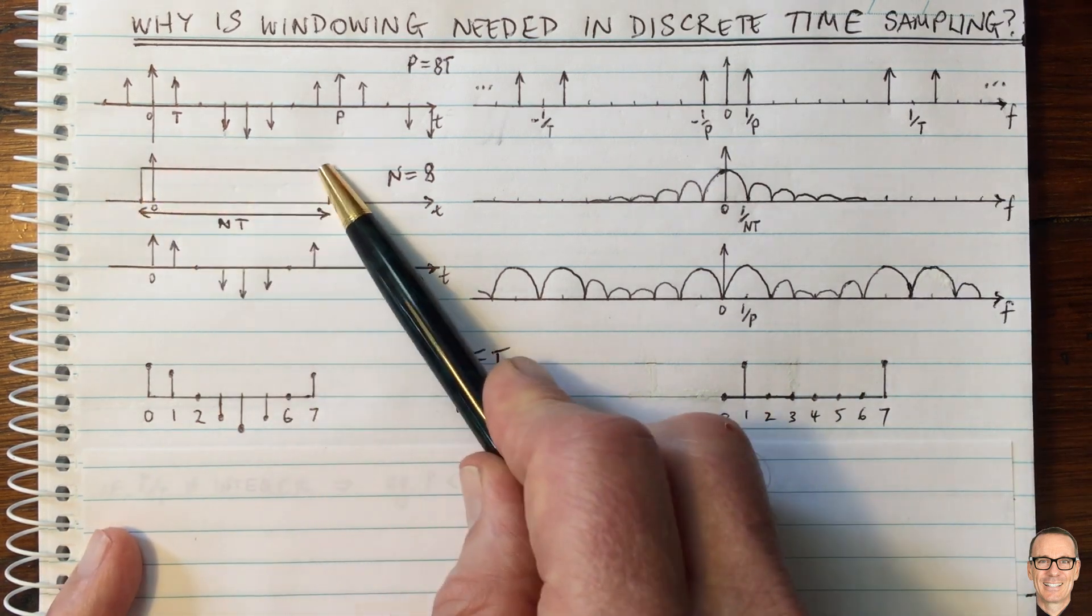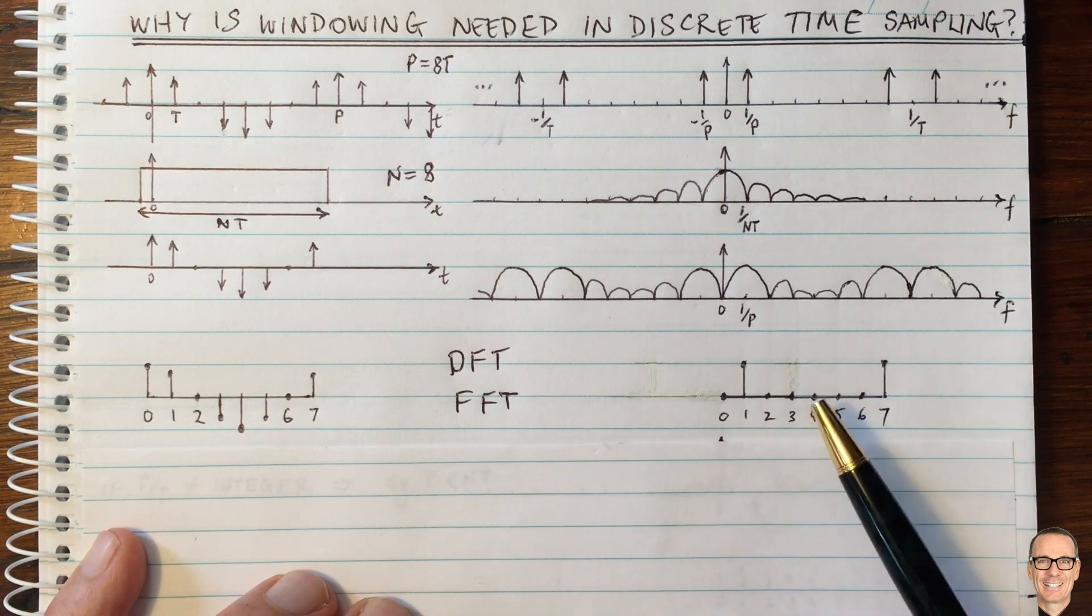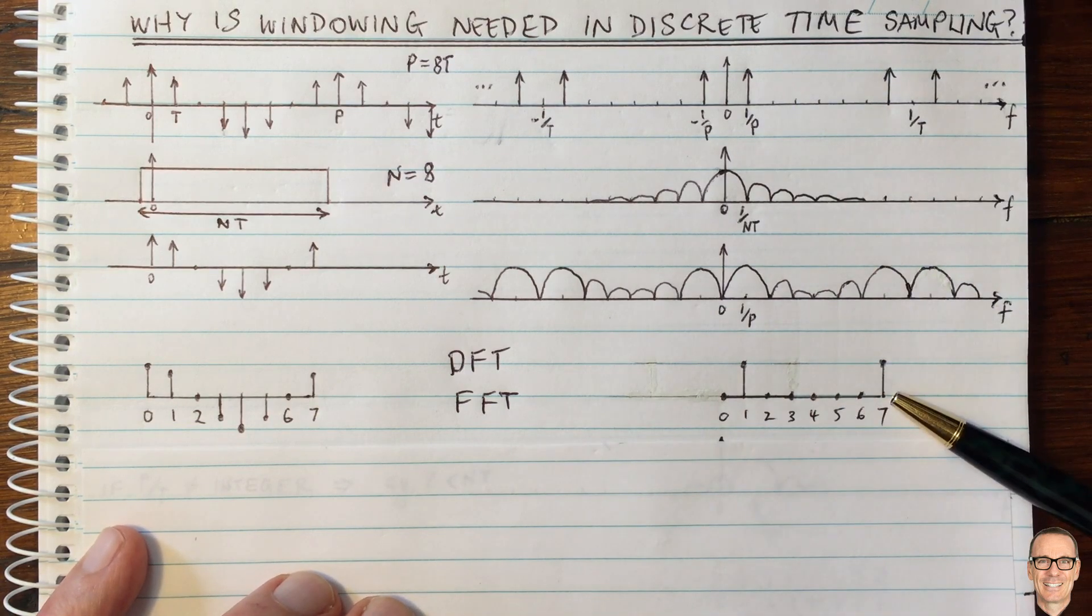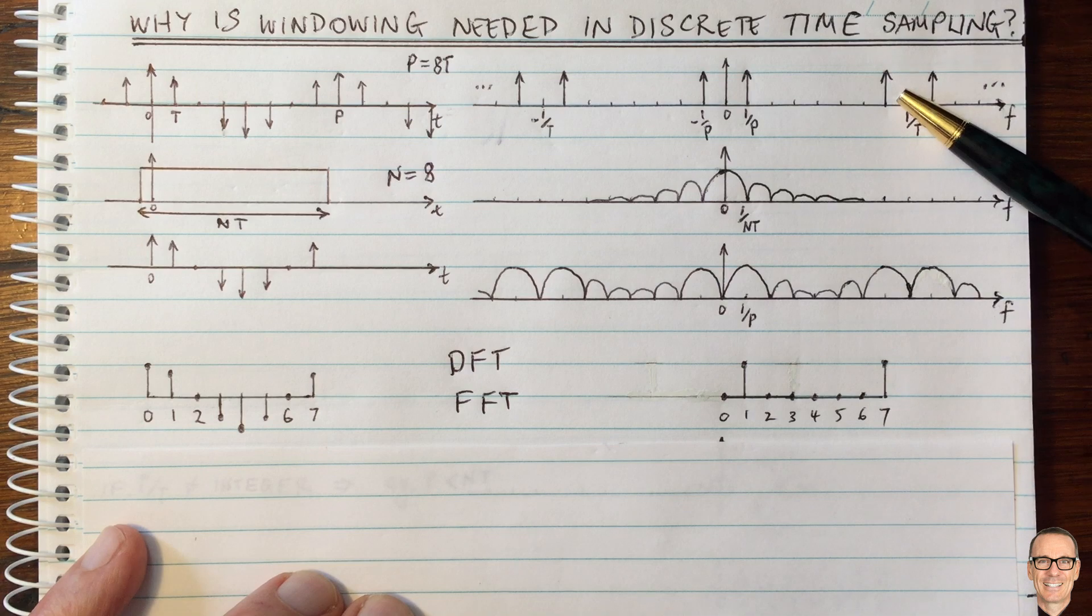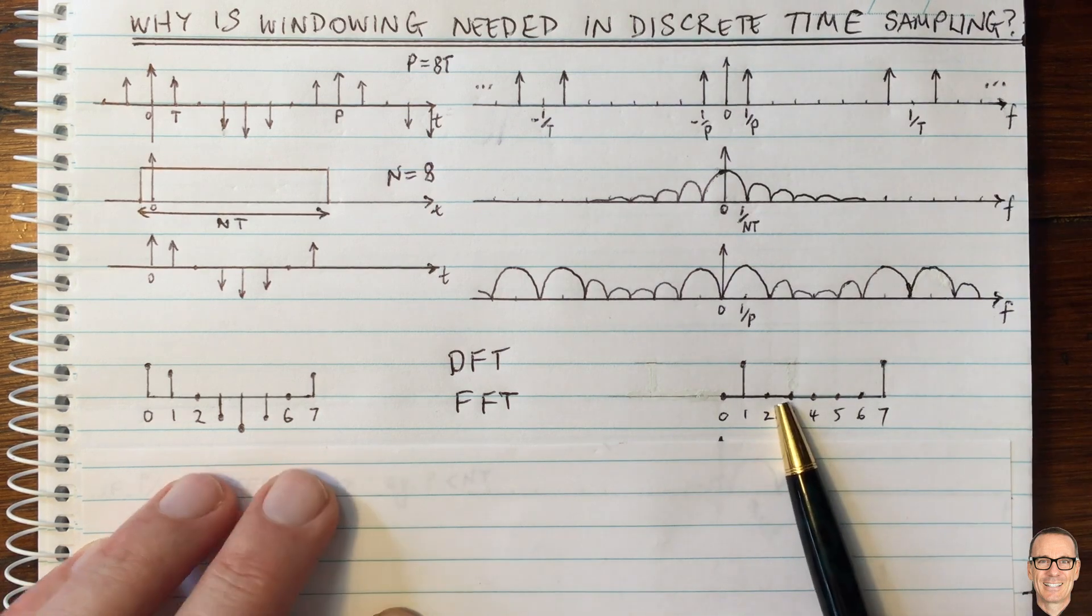We've windowed this with a square window and we got what we were hoping to get in terms of a discrete time representation of what we expect, which are these single delta functions. So what's the problem?